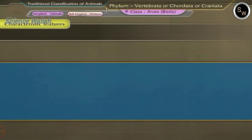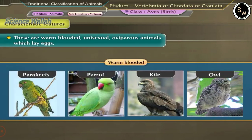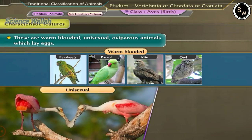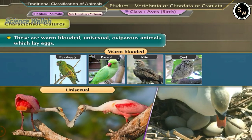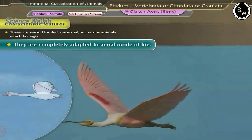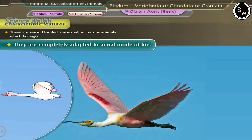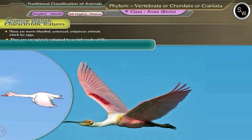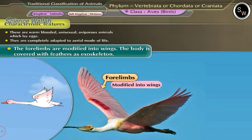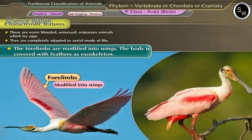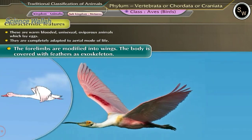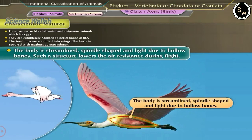Class Aves: Birds. The characteristic features of this class are: these are warm-blooded, unisexual, oviparous animals which hatch their eggs. They are completely adapted to aerial mode of life. The forelimbs are modified into wings. The body is covered with feathers as exoskeleton.